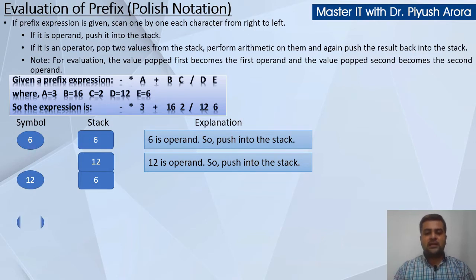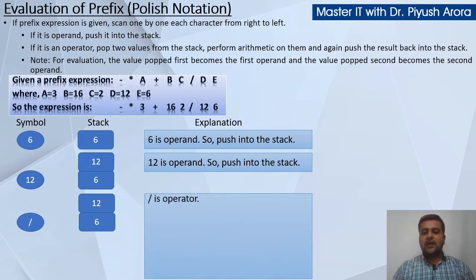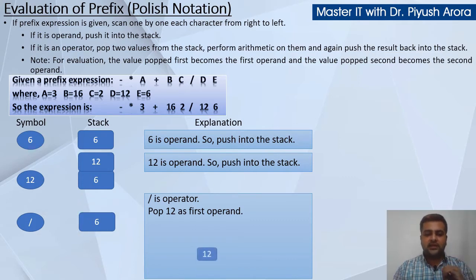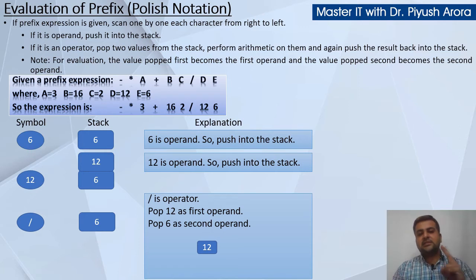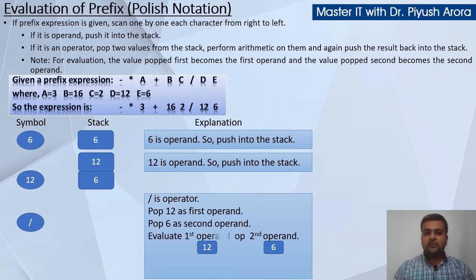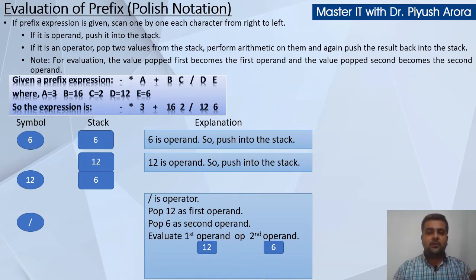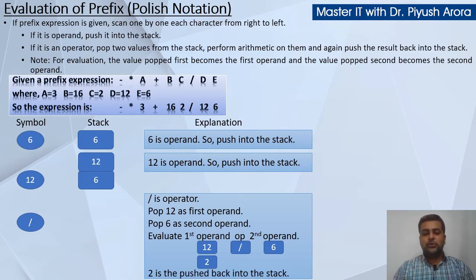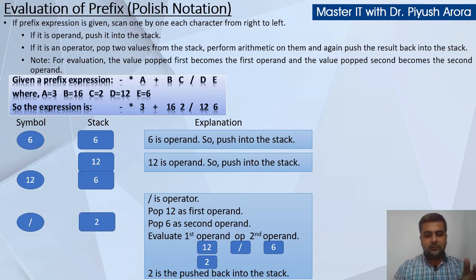Right side se next value scan karenge, toh next is divide — and divide is an operator. Toh ab hum pehle 12 ko pop karenge as the first operand. 12 ko stack mein se nikaaliye aur use first operand assume kijiye. Next pop 6 as the second operand — 6 ko nikaaliye stack mein se, usko expression ka second operand banaiye. Evaluate: first operand op second operand. Op is divide, so 12 divided by 6 equals 2, and 2 is pushed back into the stack.